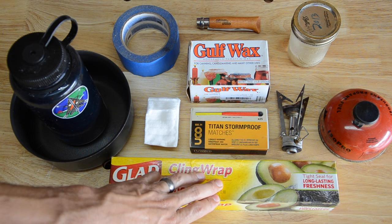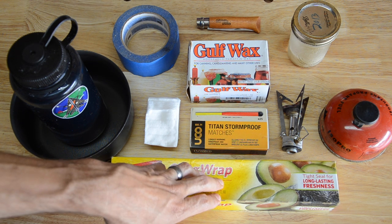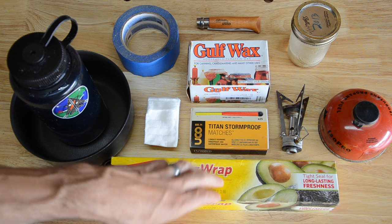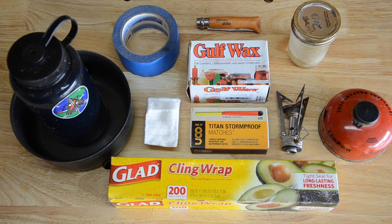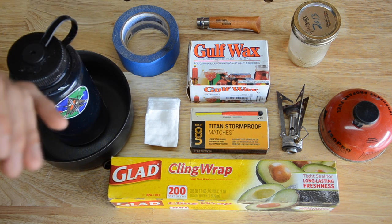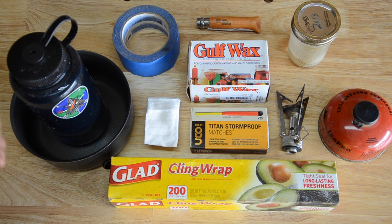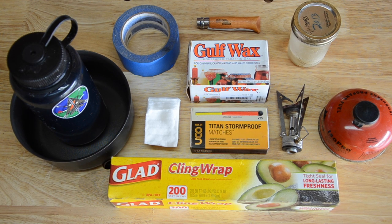I've got some cling wrap for the end. Any sort of plastic wrap will work. And of course the matches. I'm using the Titan Stormproof matches because those are the longest burning matches that I'm aware of that are available. So that's a snapshot of the materials you're going to need. Now let's talk about how we actually make these.